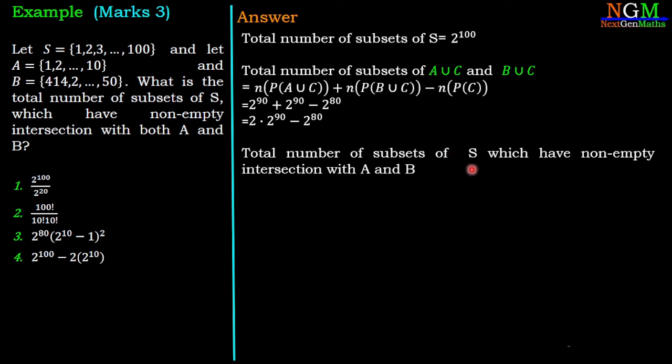Total number of subsets of S which have non-empty intersection with A and B are: total number of subsets of S, which is 2^100, minus total number of subsets of A union C and B union C which do not have non-empty intersection with A and B. Which is 2^100 minus 2 times 2^90 minus 2^80, which will give 2^80 times (2^20 minus 2 times 2^10 plus 1). If we rewrite, then we have 2^80 times (2^10 minus 1)^2.